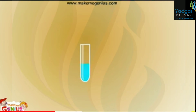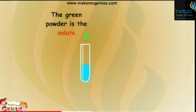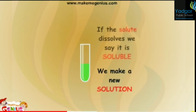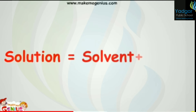We take water — it is a solvent. The medium in which another thing is mixed is called a solvent. Look at this green powder — it is the solute. The solute is added to the solvent, then we mix it and you get a solution. In our sugar solution, sugar is the solute and water is the solvent. A solution is a mixture of solvent and solute.